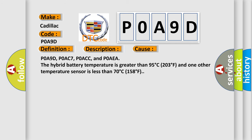POA9D, POAC7, POACC, and POAEA: The hybrid battery temperature is greater than 95 degrees C (203 degrees F) and one other temperature sensor is less than 70 degrees C (158 degrees F).